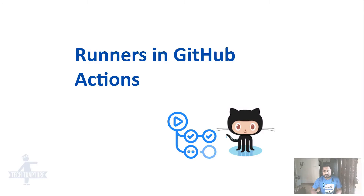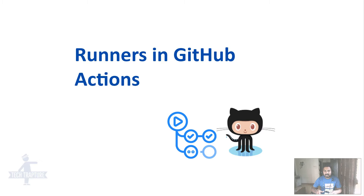Hello, welcome back. In our playlist 'Mastering GitHub Actions', we are here with one more video. In this video we are talking about a very important component of a GitHub Action workflow - that is a runner. We'll see what is a runner in GitHub Actions, why we need runners, what are different types of runners, and what are the limitations of each type.